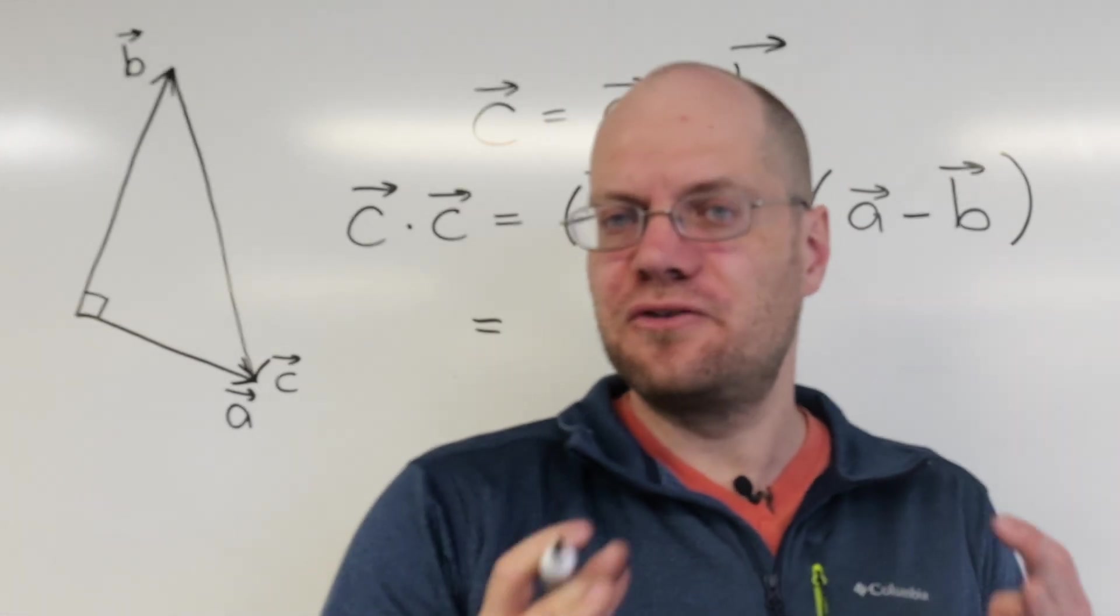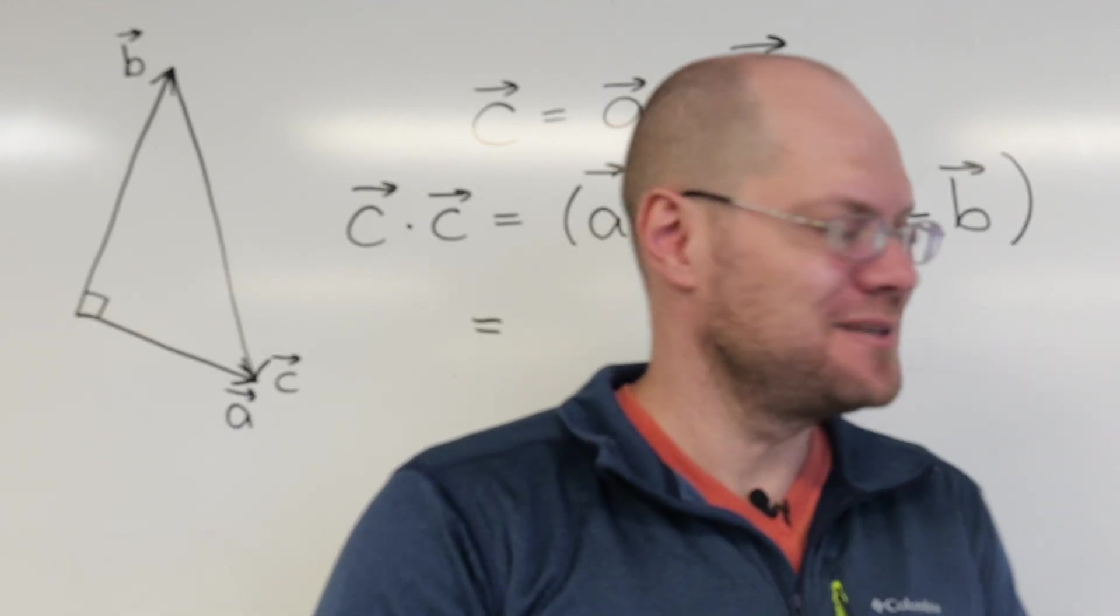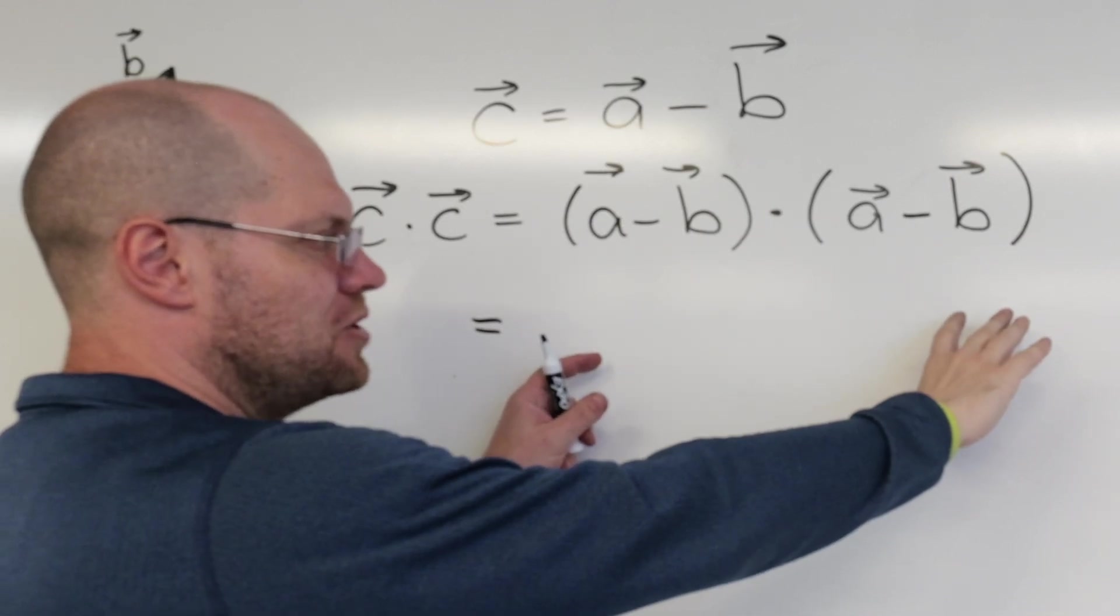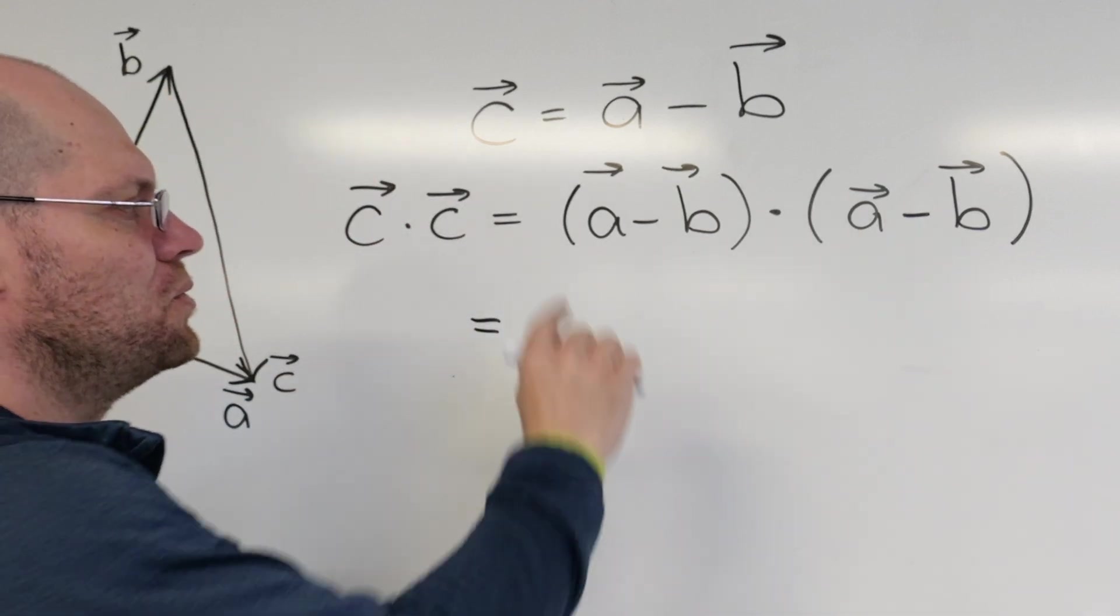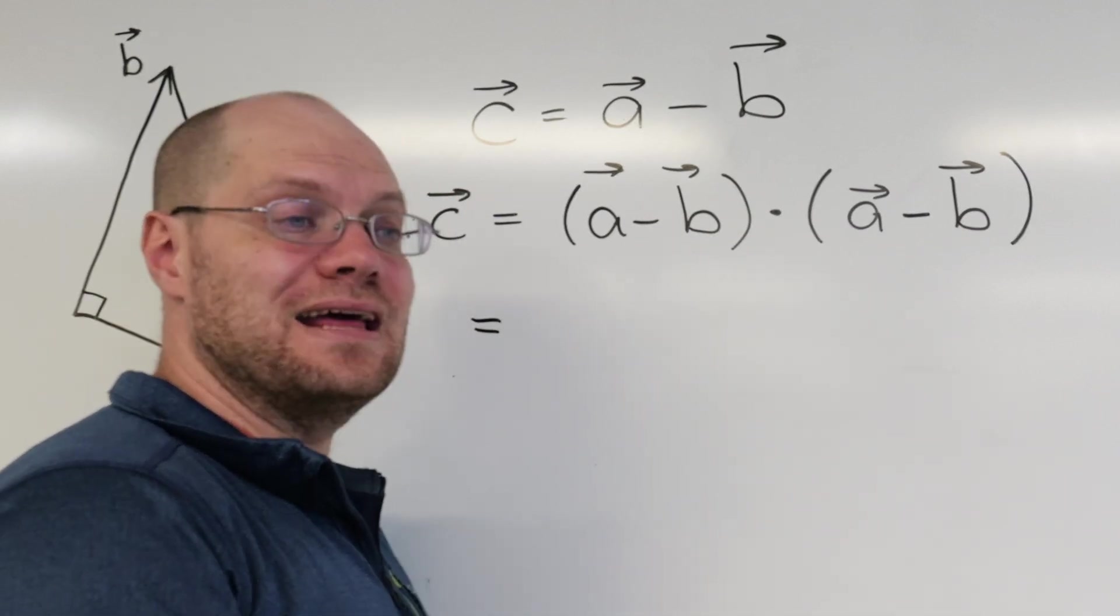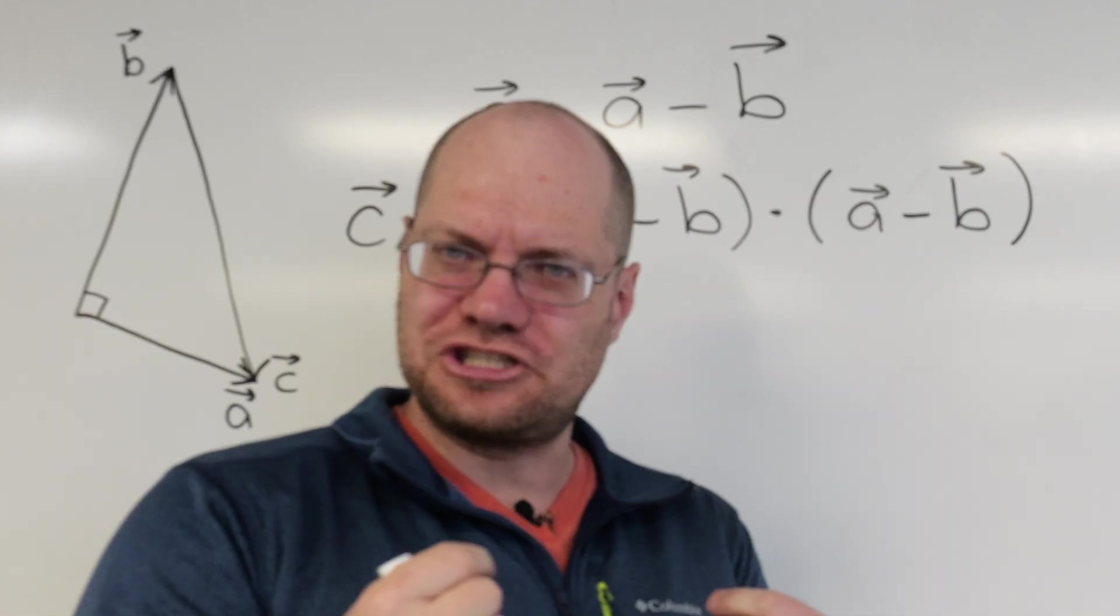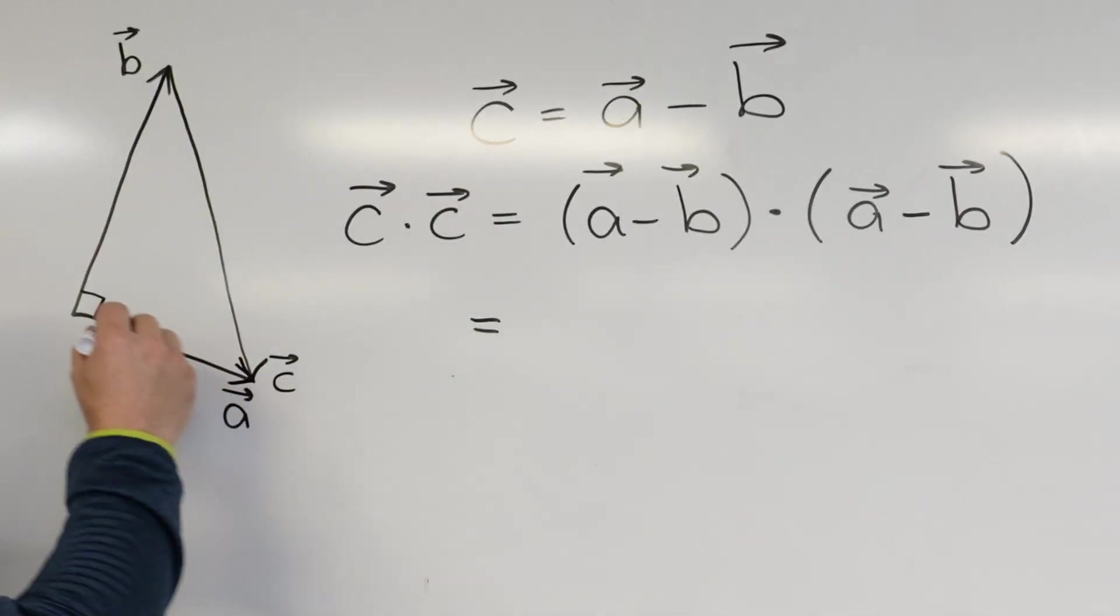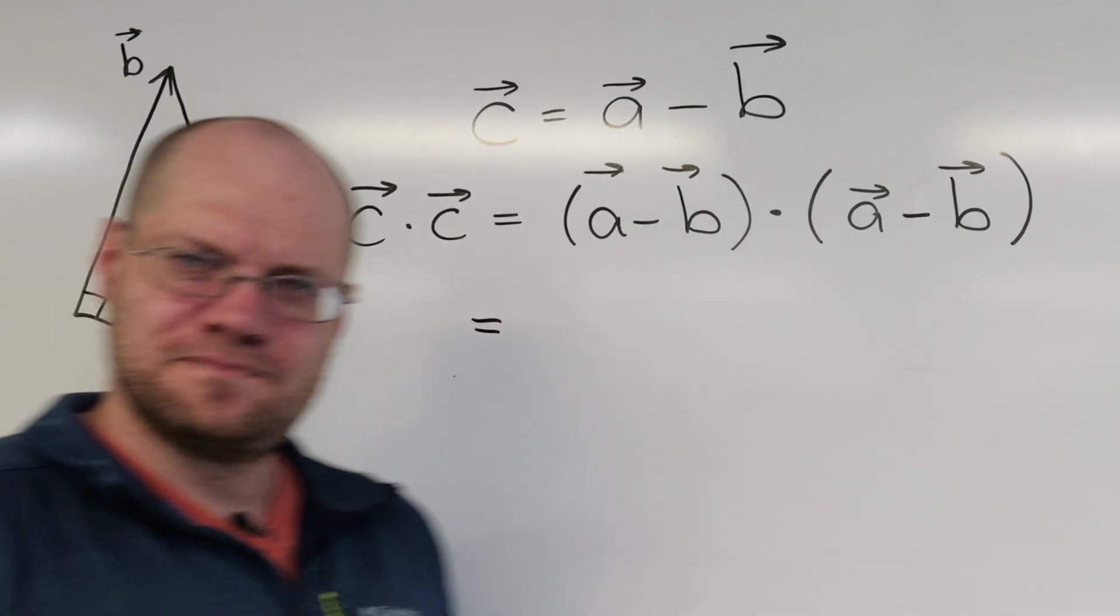By an application of the distributive property, as a matter of fact, by an application of the distributive property three times, once to distribute on this minus sign, and then in each of the remaining terms, you will have to use the distributive law to distribute on this minus sign, we'll get A dotted with A, plus B dotted with B. And then, I'm going to skip this detail now, A dotted with B, by the very definition of the dot product, as the length of one times the length of the other, times the cosine of the angle between them, which is 90 degrees and therefore zero. The cosine is. We're left with A dotted with A.